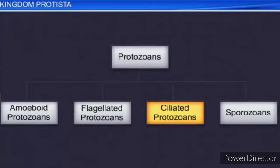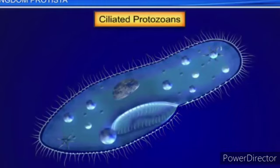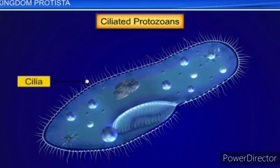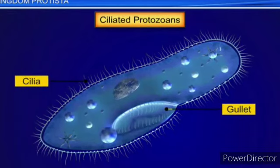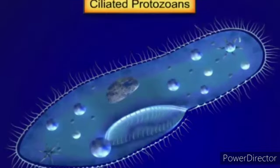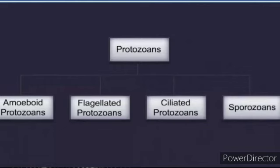The third classification is ciliated protozoans. These are aquatic, actively moving organisms because of the presence of thousands of cilia — similar to flagella, cilia is also a locomotory structure. They have a cavity that opens to the outside of the cell surface. The coordinated movement of rows of cilia causes water laden with food to be steered into the gullet. Example: Paramecium.